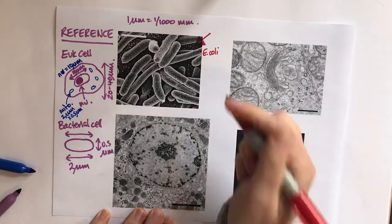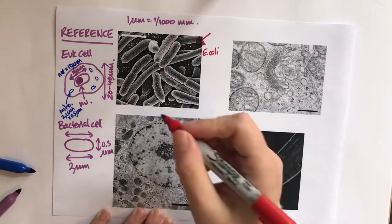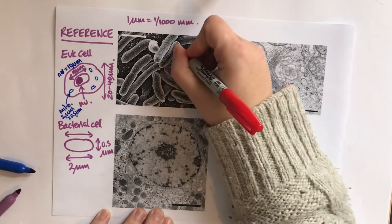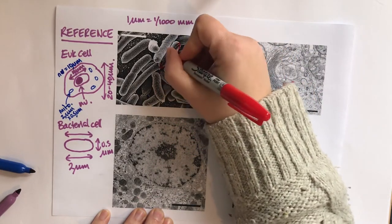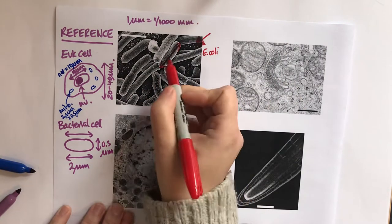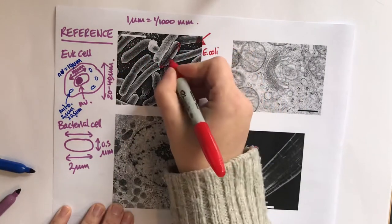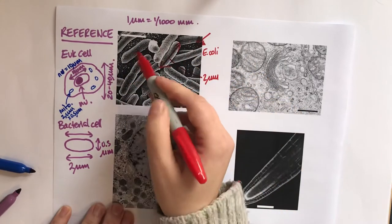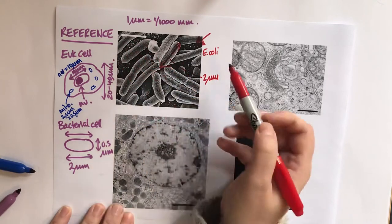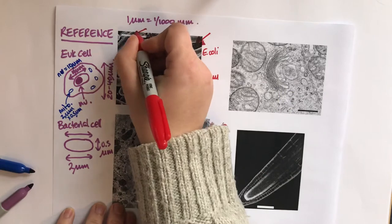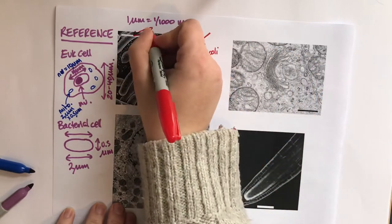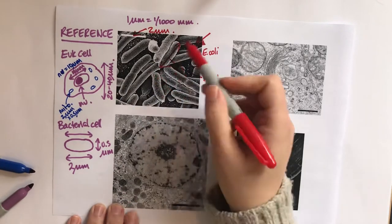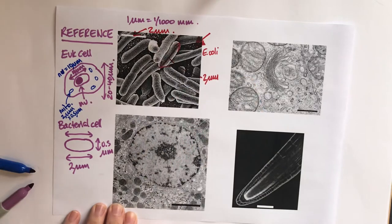We know it's E.coli, so we know that each cell should be about 2 micrometers across. If I then look at my scale bar, my scale bar is roughly the same size as a cell. So the best estimate for that scale bar I think would be about 2 micrometers.